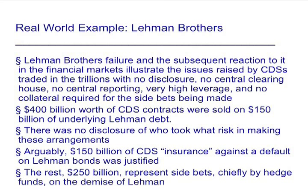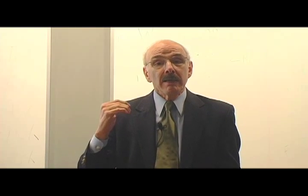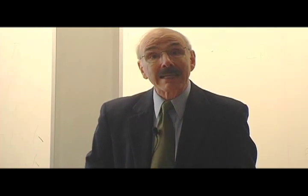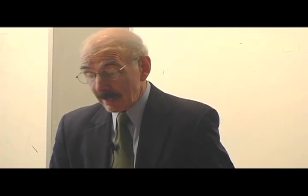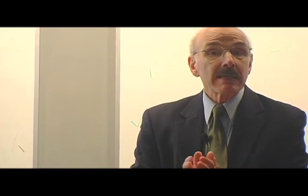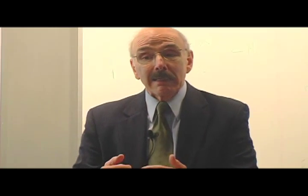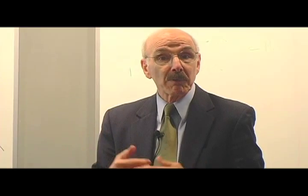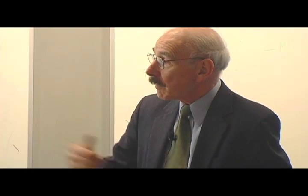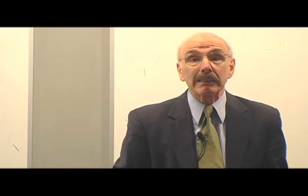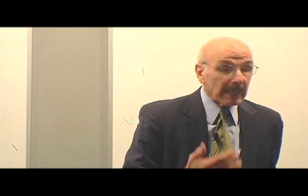That other $250 billion was typically bought by hedge funds, and represented side bets on whether Lehman would fail. In 2004, the SEC eliminated the uptick rule, which said that in order to short a stock, the stock had to be moving up — you couldn't beat it up while it was down. Getting rid of that rule is especially important for financial institutions, which even ordinary banks are levered 10 to 1 and depend on the confidence of the public. Getting rid of that rule enabled hedge funds to short Lehman into the ground. It's like allowing an arsonist to buy insurance on your house — these hedge funds could, in effect, burn down Lehman and collect. They had no insurable risk, like I have when I insure my own house.